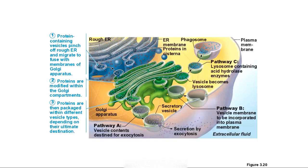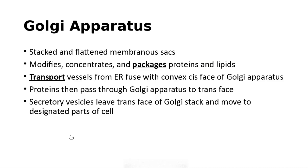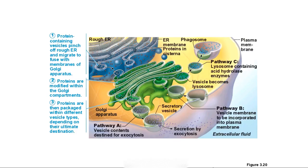The Golgi apparatus, located off of the endoplasmic reticulum, packages and transports materials — in this case, exporting them. It creates transport and secretory vesicles that can be spit out by exocytosis.